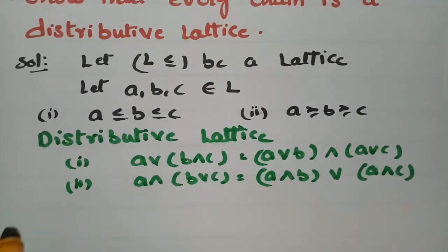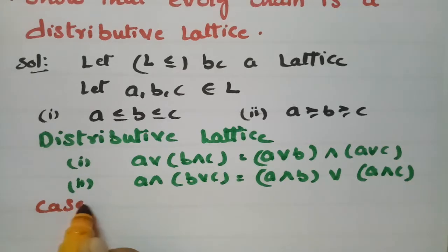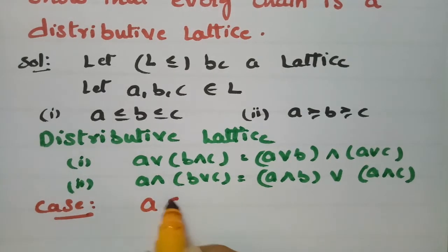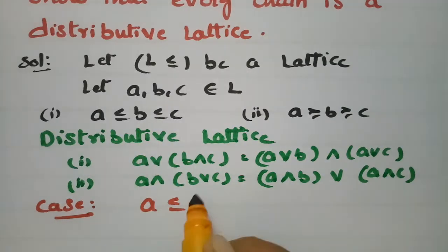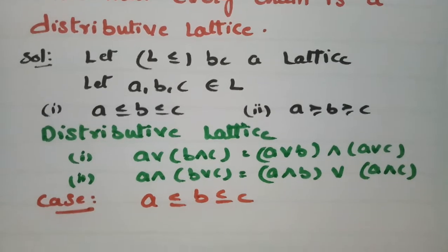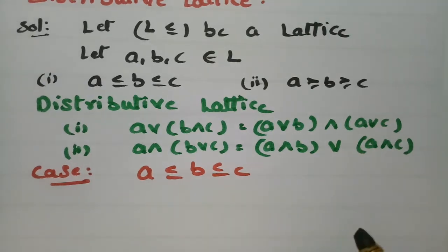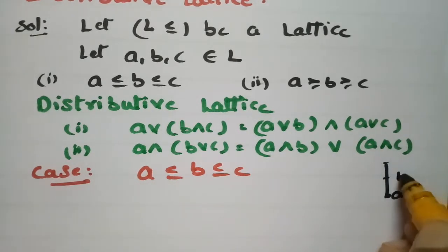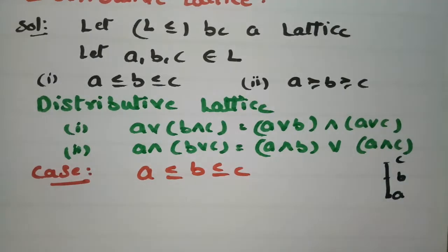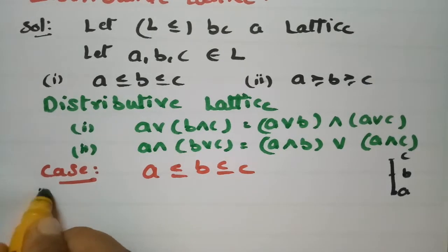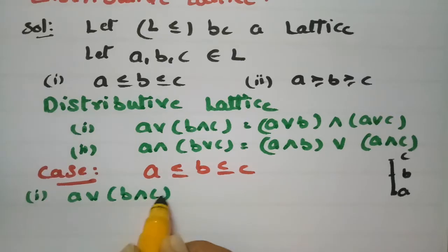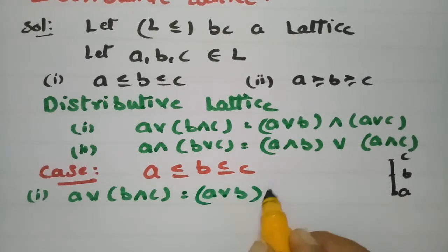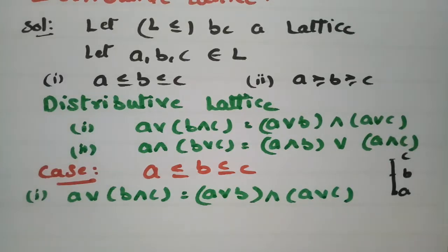For Case 1, as it is a chain, the first condition is A ≤ B ≤ C. The Hasse diagram for this has A at the bottom, B in the middle, and C at the top, since A ≤ B and B ≤ C. Now I am checking the first distributive property: A ∨ (B ∧ C) = (A ∨ B) ∧ (A ∨ C).